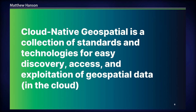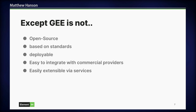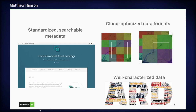Cloud native geospatial is really a collection of standards and technologies for easy access, discovery, and exploitation of geospatial data in the cloud. The problem with Google Earth Engine is it's not open source, it's not based on any standards, you can't deploy it yourself, you can't easily integrate it with commercial providers, and you can't really extend it or build services on top of it. So cloud native geo is about taking what Google Earth Engine did and turning it into an open source set of tools. There are a few components: STAC, cloud optimized data formats, and ARD.